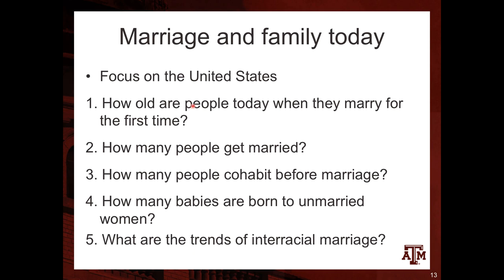Now we'll look at five main topics within the changes in marriage and family in the US: first, how old are people when they marry for the first time; second, how many people get married; third, how many people cohabit before marriage; fourth, how many babies are born to unmarried women; and fifth, what are the trends in interracial marriage in the US.